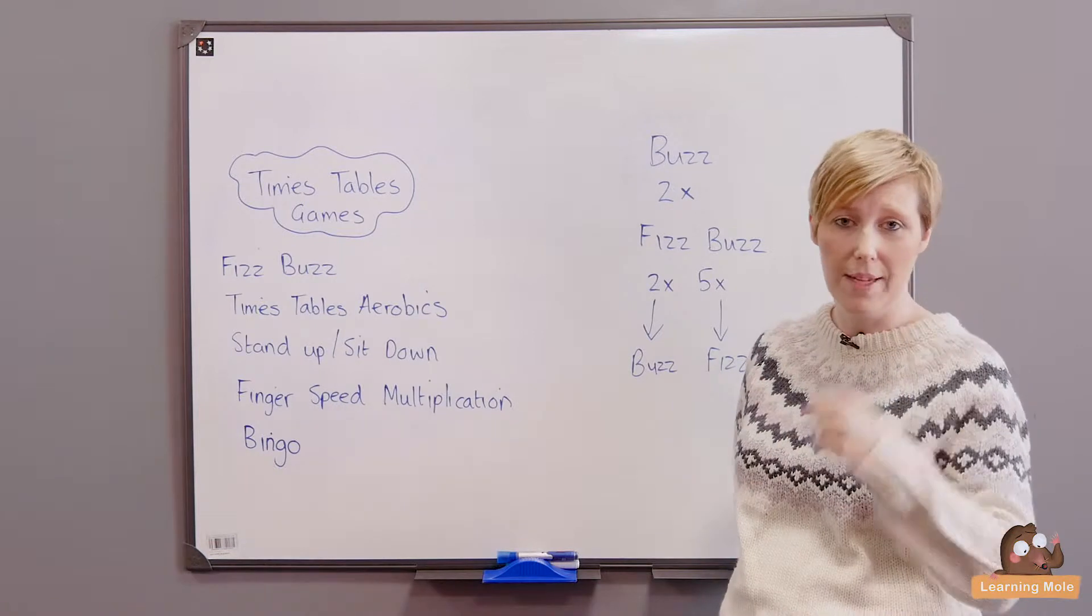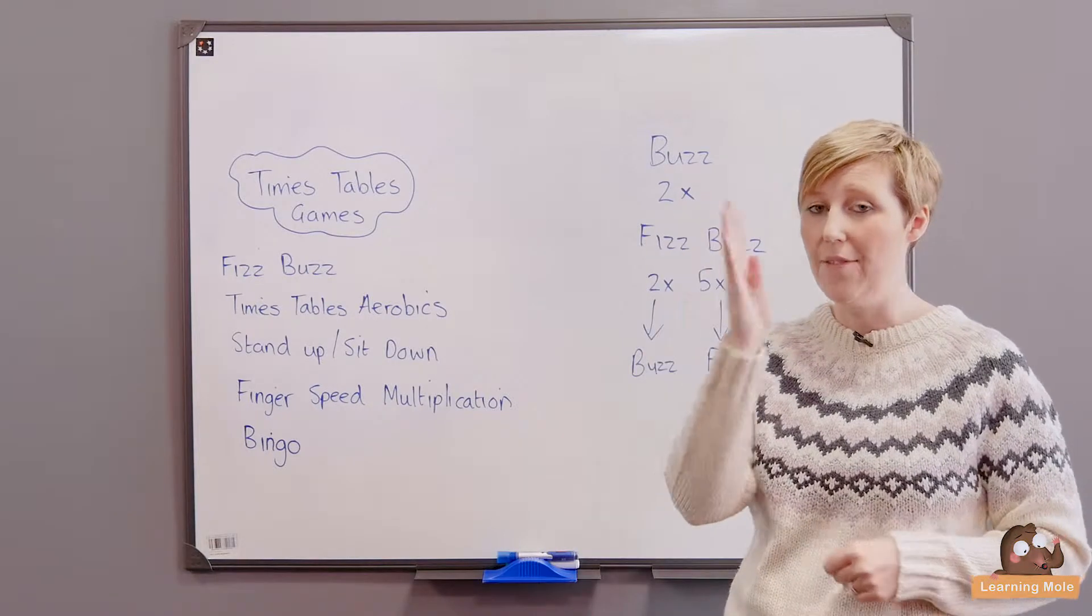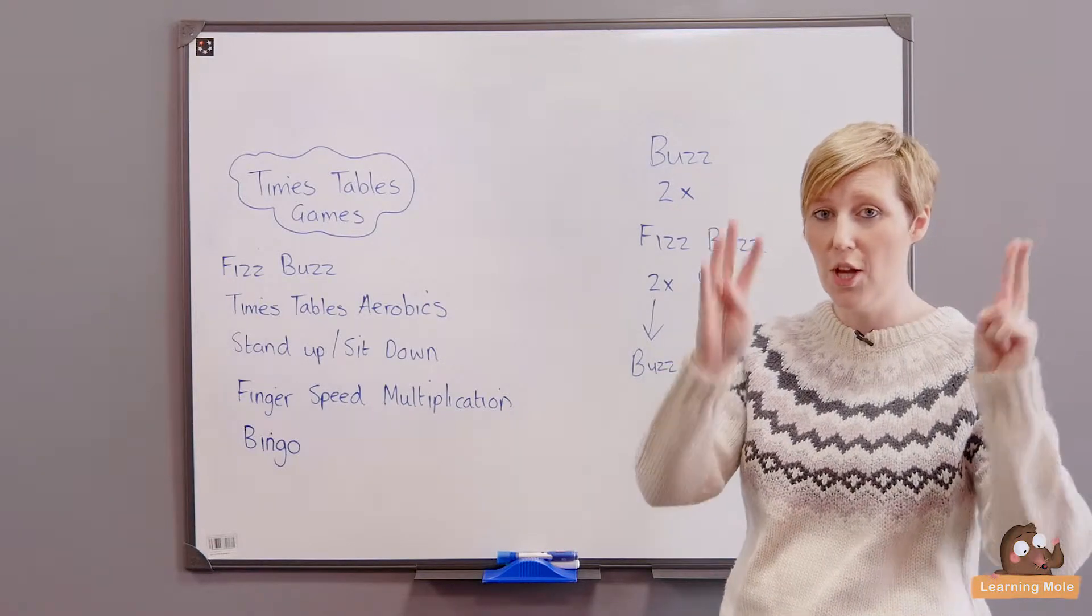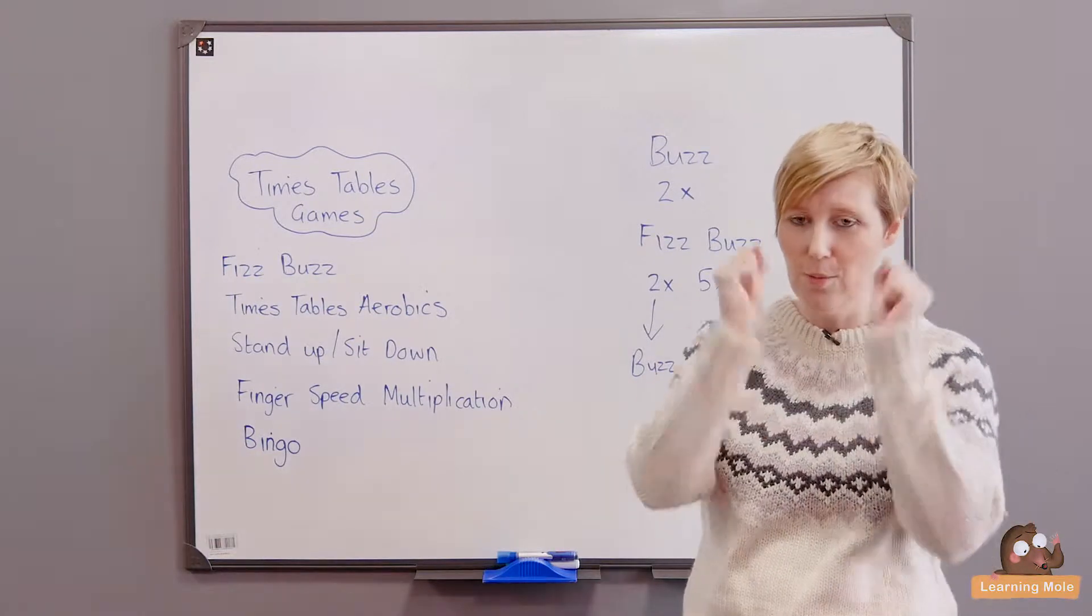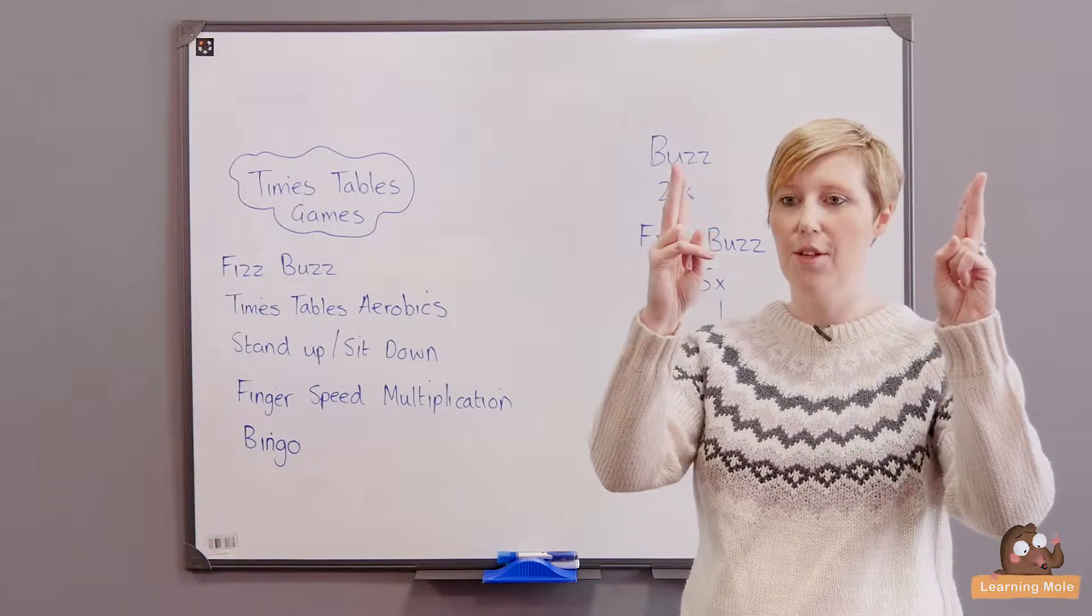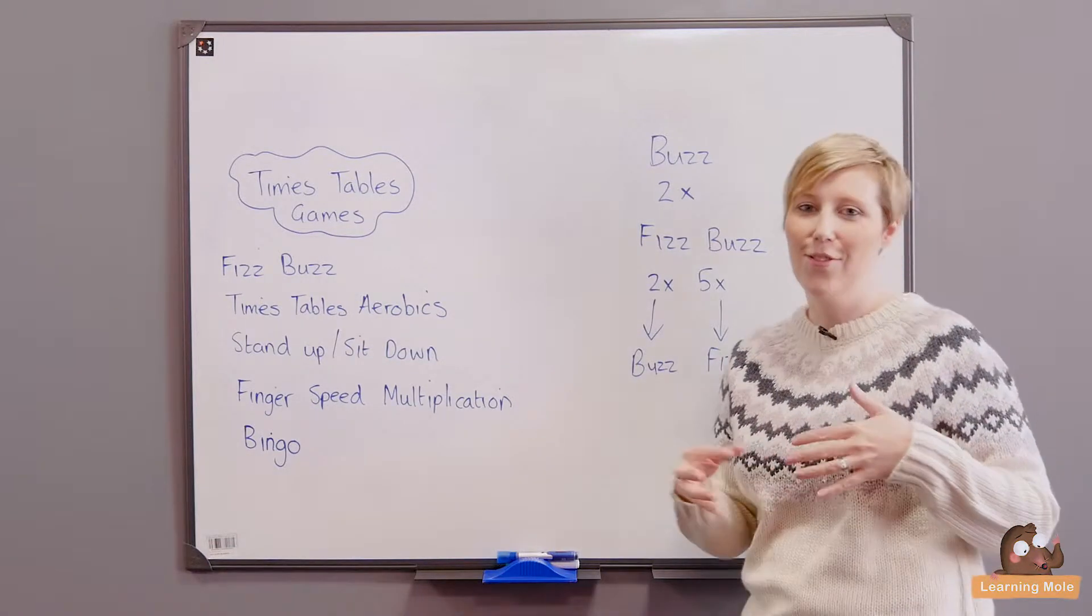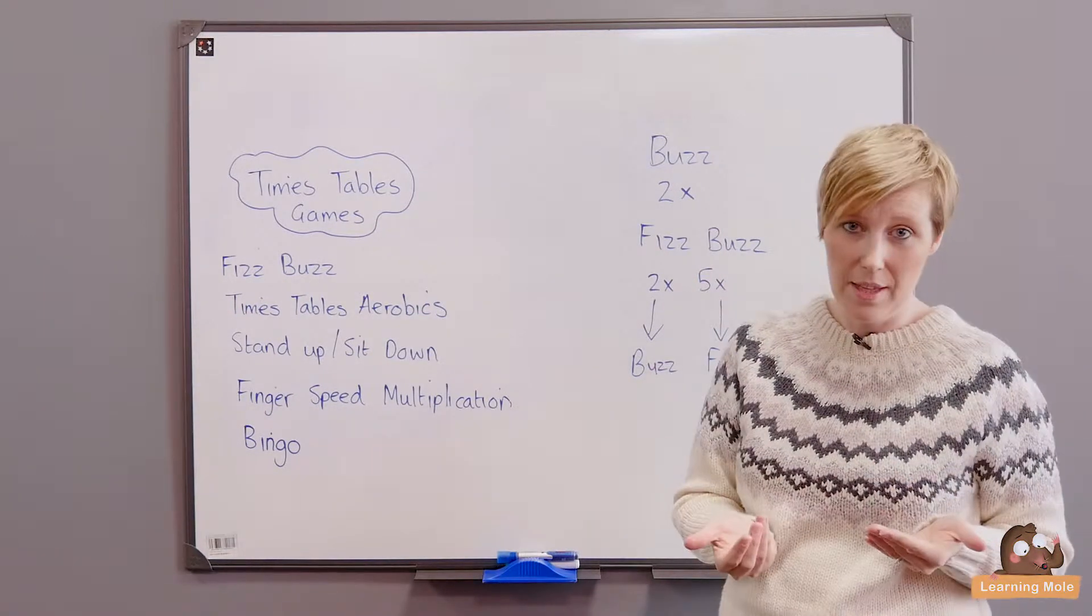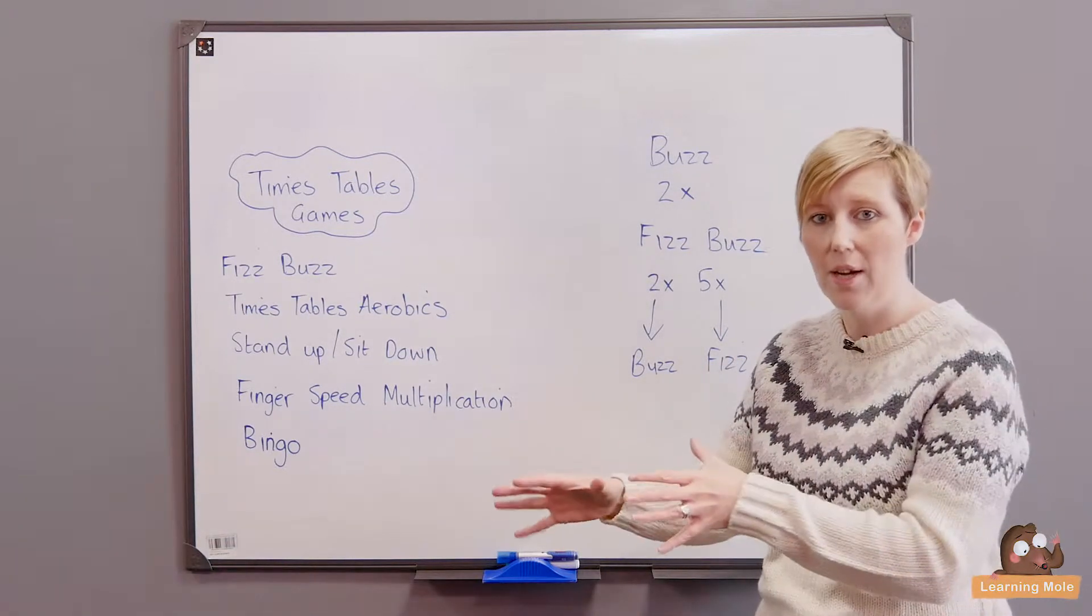So basically you'll have two children in a partnership and they basically put one hand behind their back. On a count of three or if you want to blow a whistle or ring a bell, they will put up a number on their fingers, so it could be four, could be three, whatever. The other partner will put up a number and you need to multiply those two numbers. So four times two, the first person to shout out the answer, eight, is the winner. And you can also then add in the ten fingers as well so they can put up ten times ten. It's not great for getting up to the twelve times tables but it's a good way of getting started and especially with those earlier times tables.